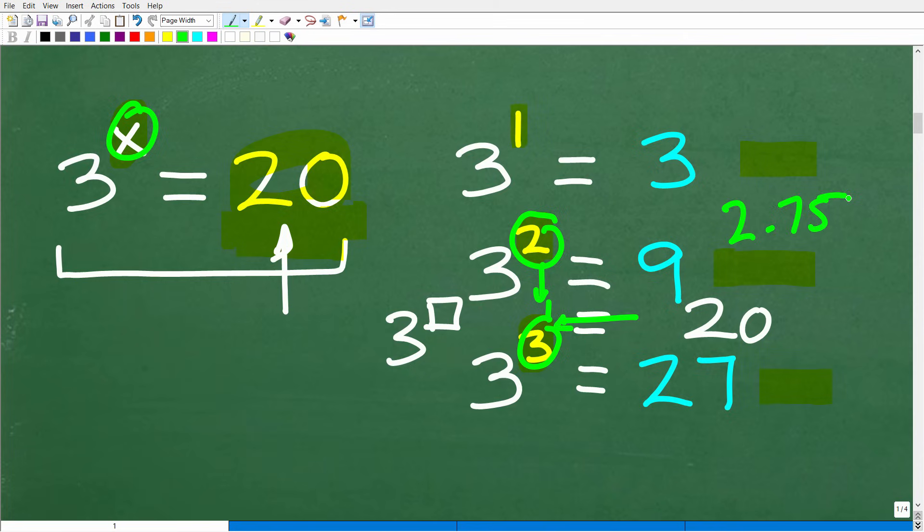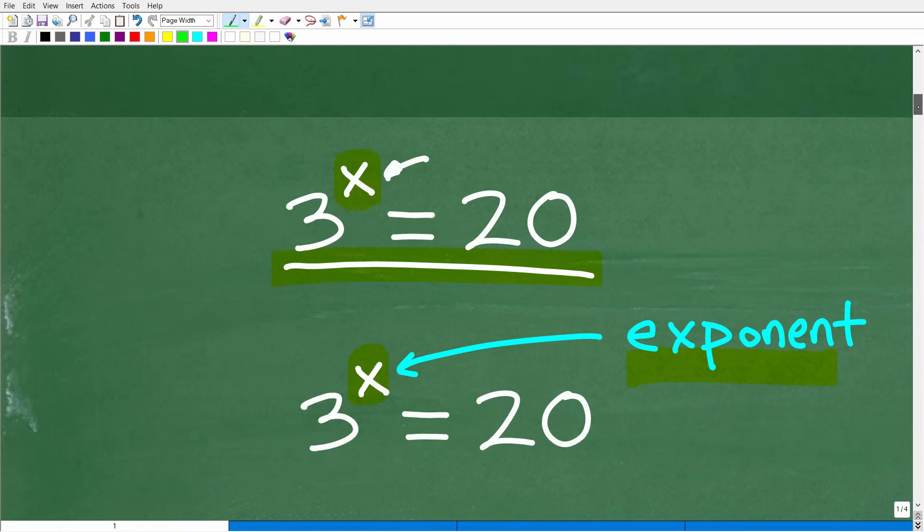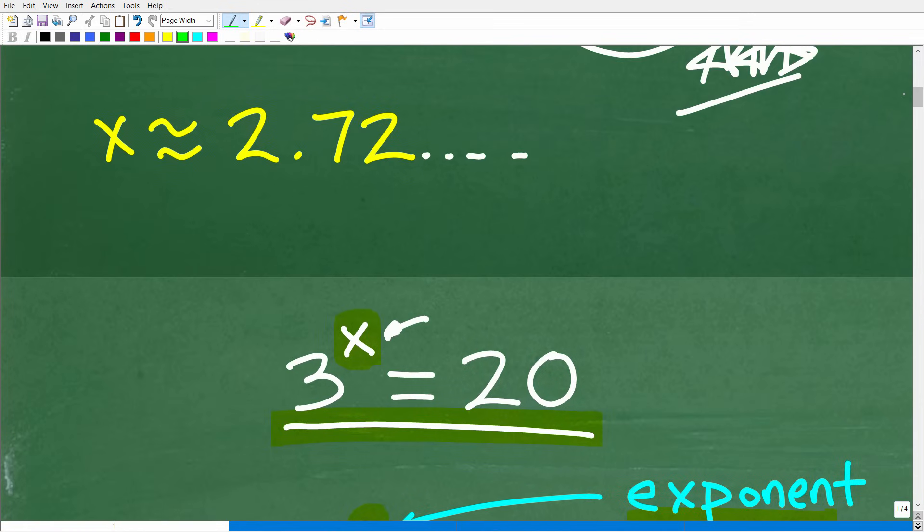So three to the third power is 27. We're looking for three to some power to equal 20. So what can we kind of conclude here? Well, hopefully you can see that our power is going to be greater than two, but less than three and probably a little bit closer to three. So if I was going to take a guess, maybe like 2.75.